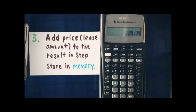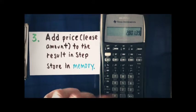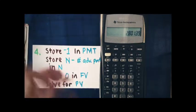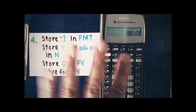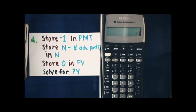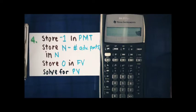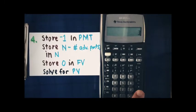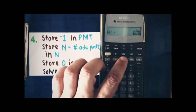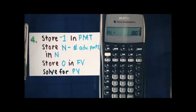I'm going to store $2,801.39 into memory 0 — it really doesn't matter which memory register you pick; we just want that number stored. Going to step 4, we're not going to clear the time value of money registers — we're going to keep going. We're going to enter negative 1 into payment. The length of the lease is 48 months minus A, which is 3 in this case, so N is going to be 45. We store 0 into future value, and compute present value again, and I get a present value of 38.07.